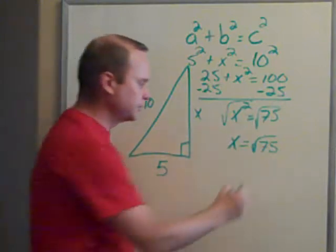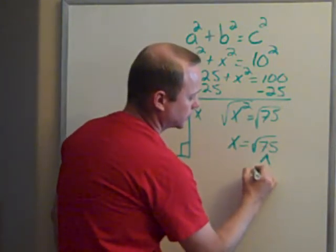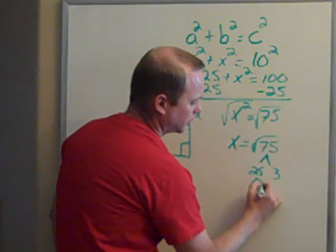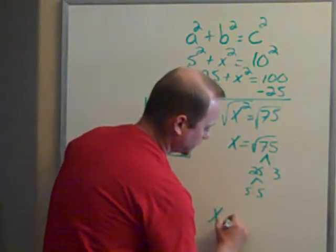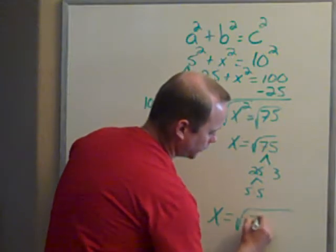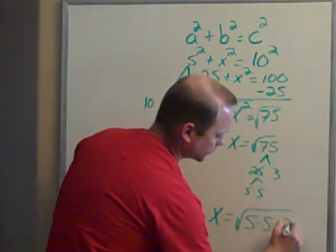Now, 75 can be reduced. This is 25 times 3. 25 is 5 times 5. So if I wanted to rewrite this, X is equal to the square root of 5 times 5 times 3.